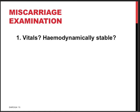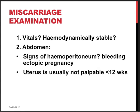In an exam setting, always ask for the vitals. Is the lady hemodynamically stable? What is the blood pressure, pulse rate, respiratory rate? Does she have symptoms of fainting or a clammy skin? Examination of the abdomen usually reveals nothing of concern in a miscarriage, but in early pregnancy we must actively search for signs of hemoperitoneum consistent with a bleeding ectopic pregnancy. Usually the uterus is not palpable unless the pregnancy is more than 12 weeks.